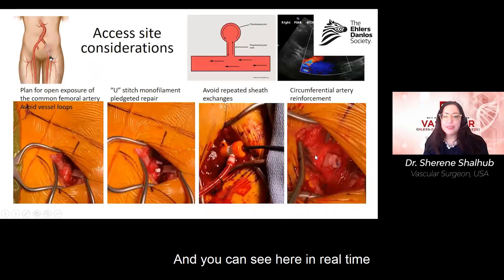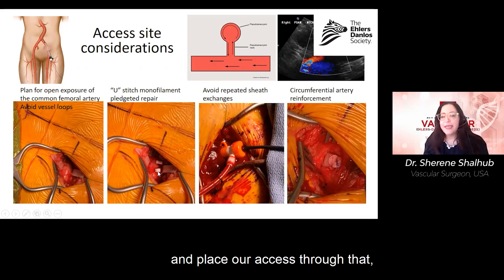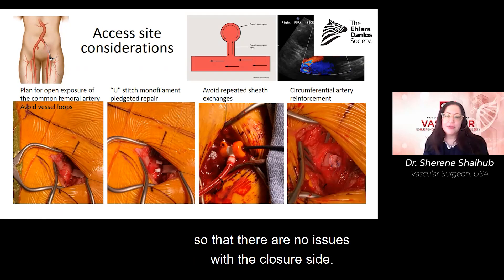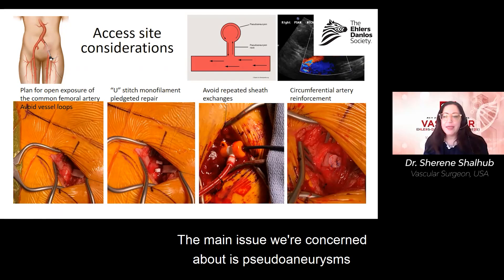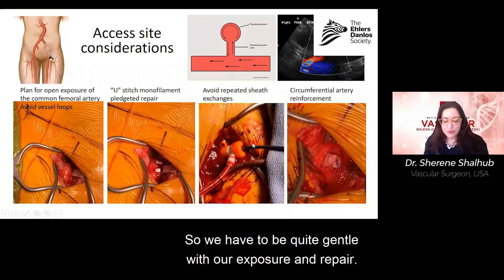You can see in real time how we've done this as well. It's a small incision — we can see the artery and place access through it, then buttress the artery with circumferential reinforcement so there are no issues with the closure site. The main concern is pseudoaneurysms or tearing of the artery, so we have to be very gentle with our exposure and repair.